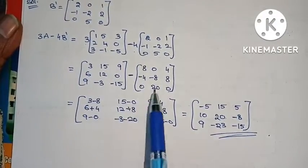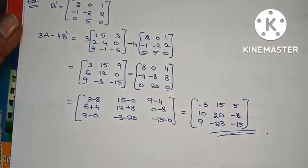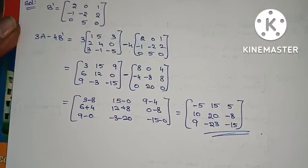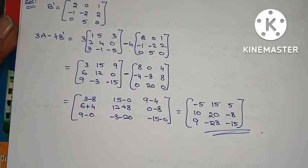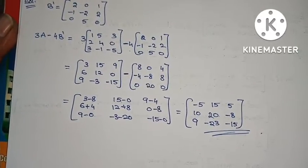The problem is quite simple. We found B transpose, substituted all values, multiplied by 3, multiplied by 4, and completed the subtraction. Very simple.